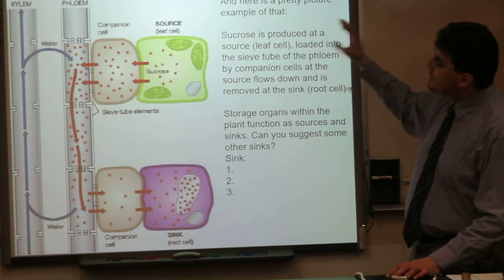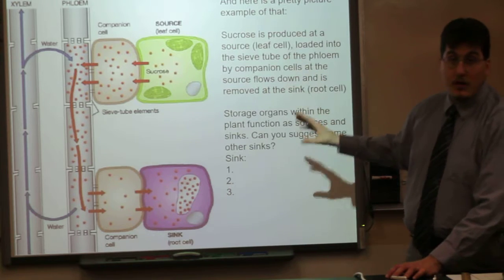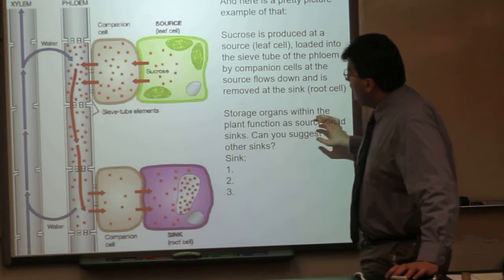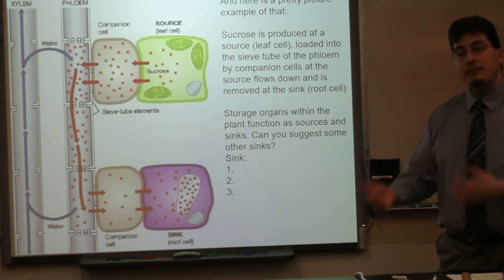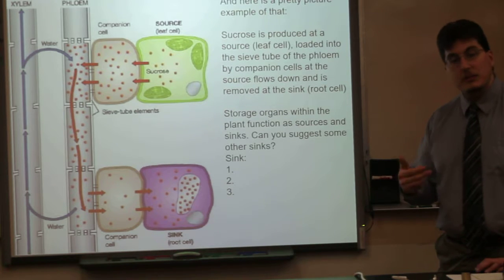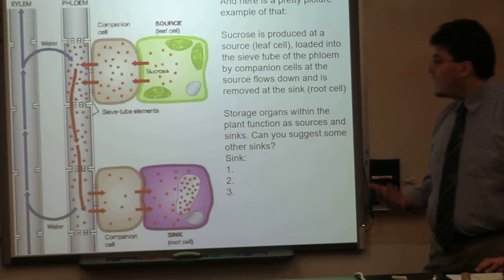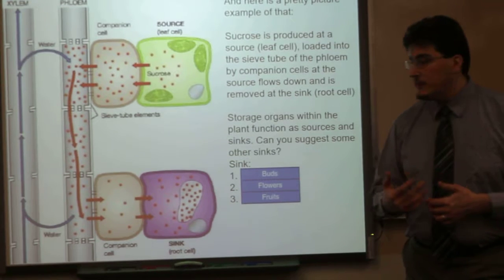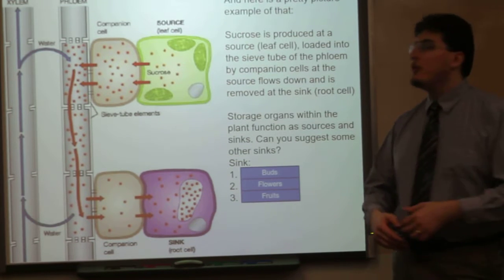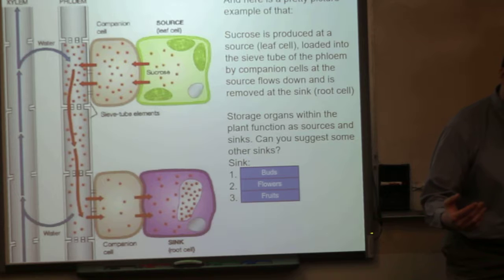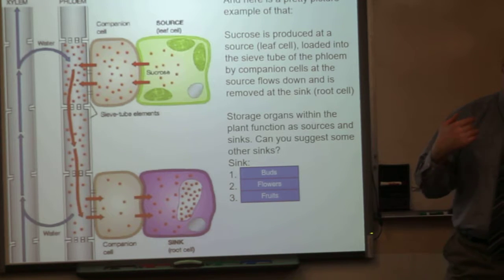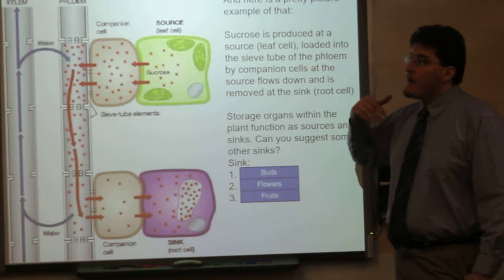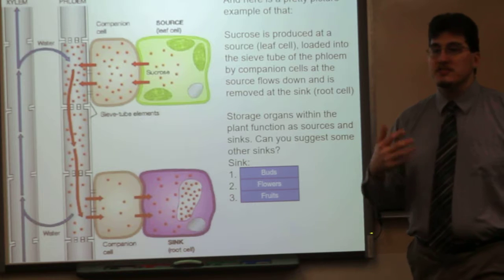In a typical plant, the assimilates are coming from somewhere, and that somewhere is the source. The leaf is typically where those assimilates are made — that's the source. A storage organ or a place where those assimilates are used will be the sink. Other examples of sinks can be buds, flowers, or fruits — places where those assimilates are going to be used for new growth, for the plant to reproduce, or to form an enticing meal for some animal.